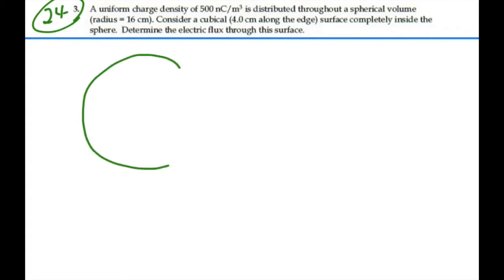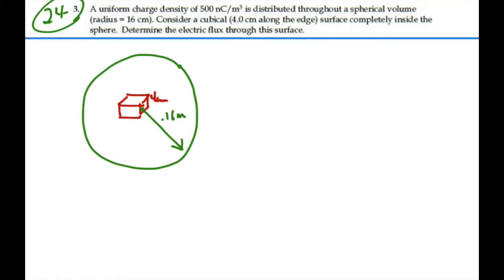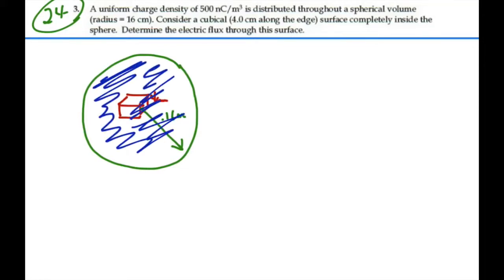Let's imagine what's going on here. We've got a large spherical surface and inside we've got a little cube. The dimensions of the cube are 4 centimeters on an edge and the radius of this large sphere is 16 centimeters, or 0.16 meters. Throughout the volume of this sphere is a charge density rho of 500 nanocoulombs per cubic meter. If I knew the volume of the sphere I could figure out the total charge within the sphere.